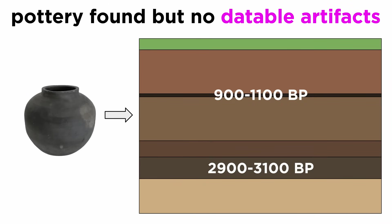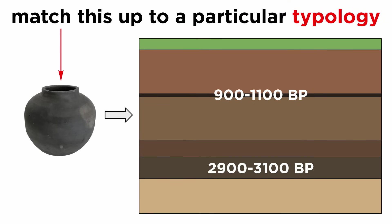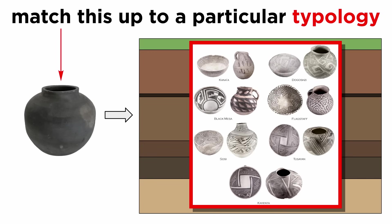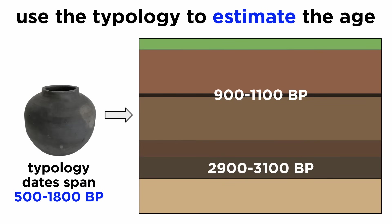Suppose in our example site, black pottery has been found throughout the village, but no datable artifacts have been found. However, we can find a typology the black pottery can fit into. This involves looking at typologies of pottery from your region and finding one that matches the characteristics of this pottery. Perhaps a very similar kind of black pottery has been found at nearby sites, so we put our pottery into this typology. This pottery is seen in the archaeological record from 500 to 1800 BP. Since we placed our pottery in the same typology, we can estimate our pottery's age as being from 1000 to 1800 BP, making the full chronology of the site look something like this.